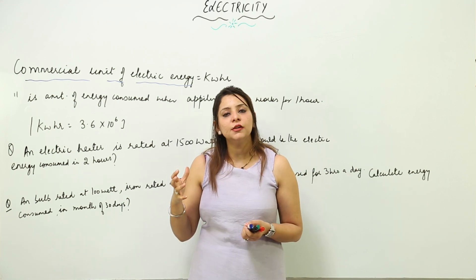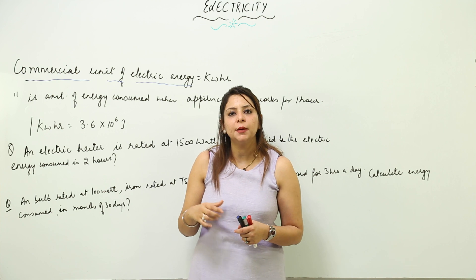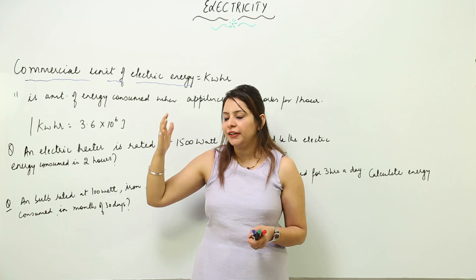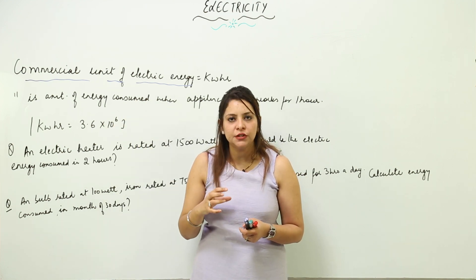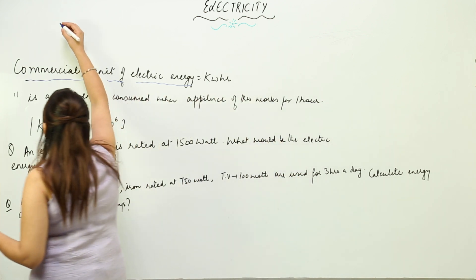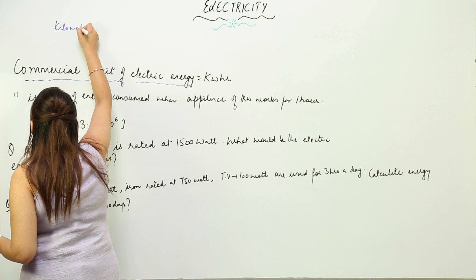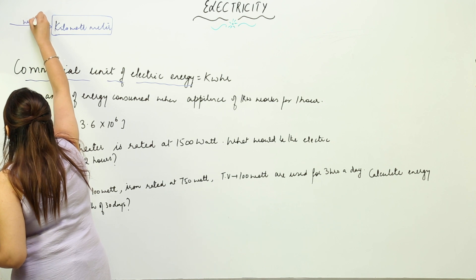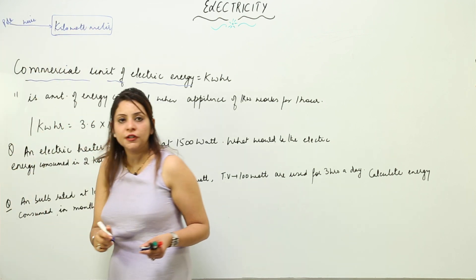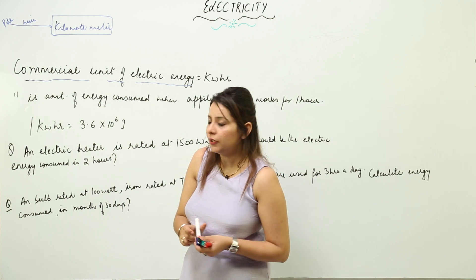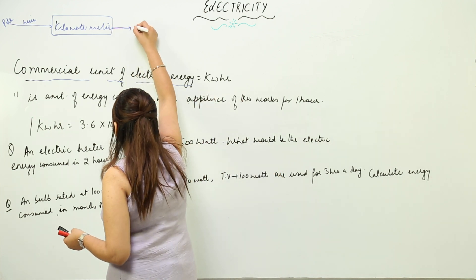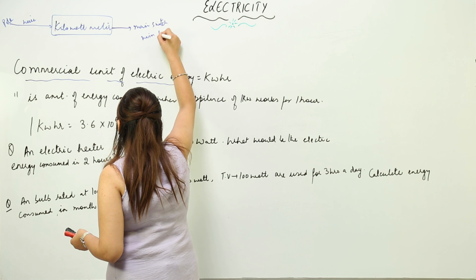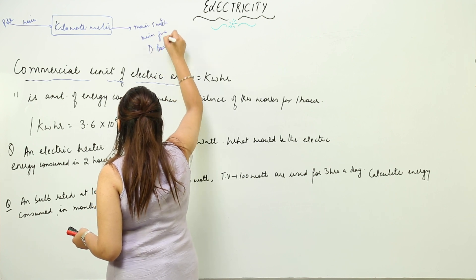The wires coming from the poles reach our homes and are connected to an energy meter, also called a kilowatt meter. So the wire from the pole comes to a kilowatt meter, and from there connections are made with the main switch and main fuse on the distribution board.